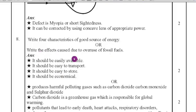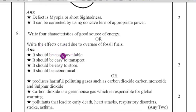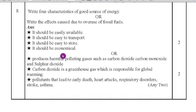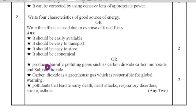The second question is write the effects of causes the overuse of fossil fuels. What happens means it produces harmful polluting gases such as carbon dioxide, carbon monoxide and sulfur dioxide. Then carbon dioxide is a greenhouse gas which is responsible for global warming and pollutants that leads to early death, heart attacks, respiratory disorders, sunstroke and asthma.